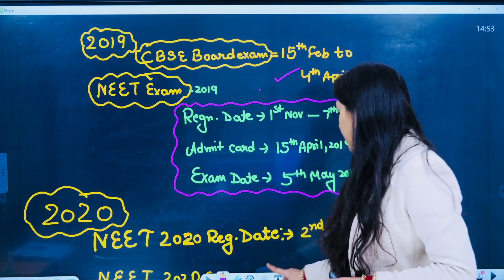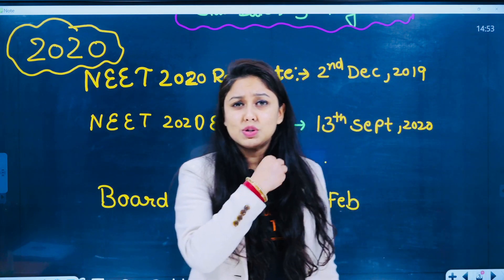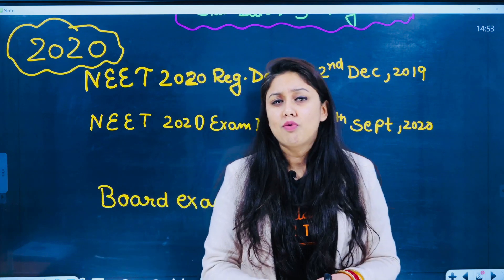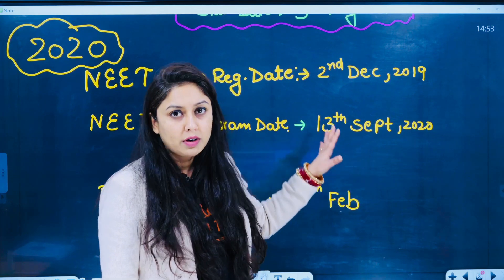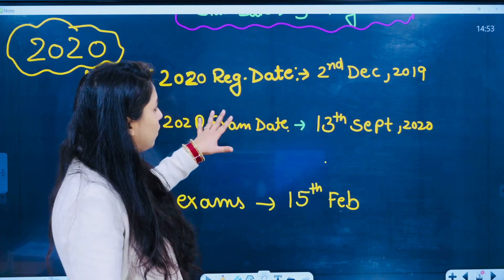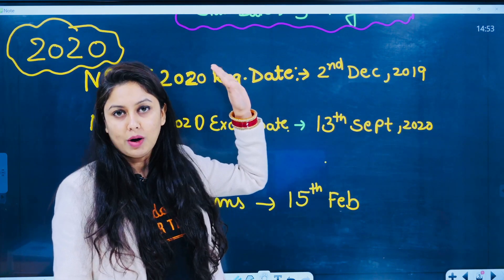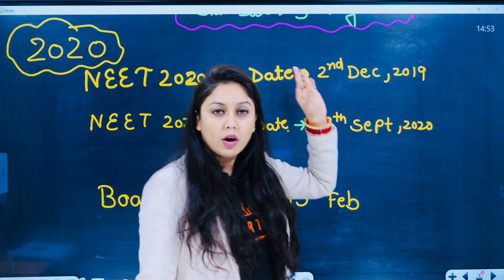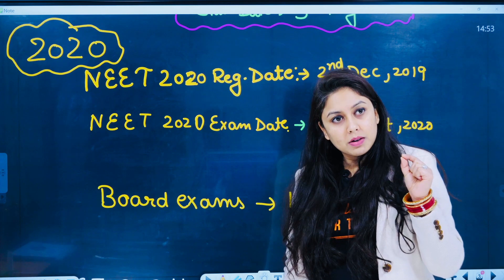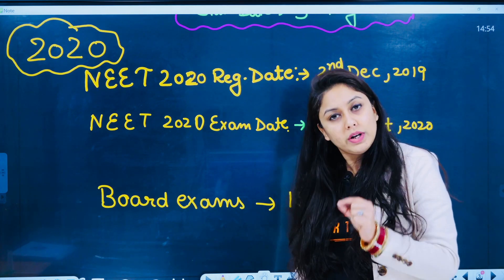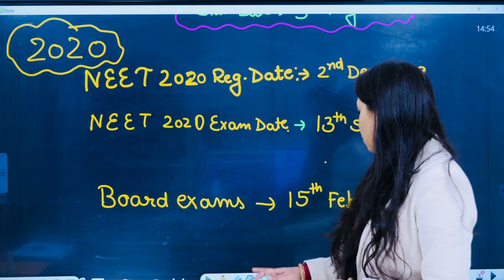Maine 2020 ka data bhi collect kiya hai, but main chahti hoon ki is pe tum zyada focus mat karo, kyunki 2020 was a ruckus year — so many transitions happened, COVID ka first lockdown laga tha. Toh yeh data aapke saamne hai, aap dekh sakte hain, but I would highly recommend you to not go through this data. Isme tum dekho ki 2nd December ko registration forms release ho chuke the, exam aapka 13th September ko hua tha — that was a different story. CBSE jo board exams the woh 15 Feb ko the, woh comments ho gayi thi. The thing here is ki agar COVID nahin hota, toh exam month yahaan pe bhi May hi hota — ya phir May ka first week hota ya second week hota, but unfortunately aisa hua nahin.